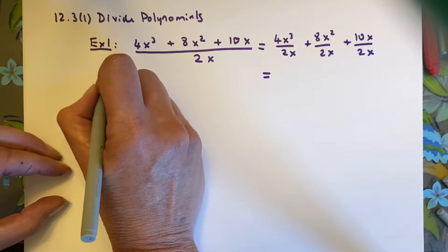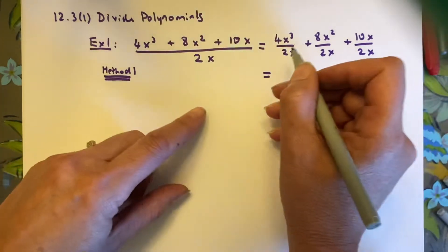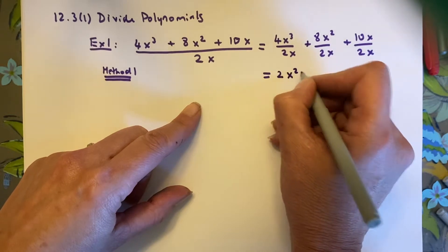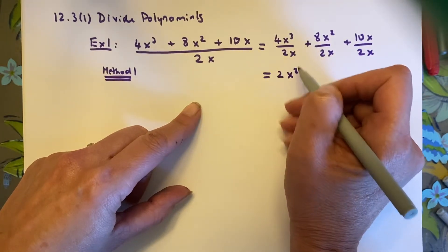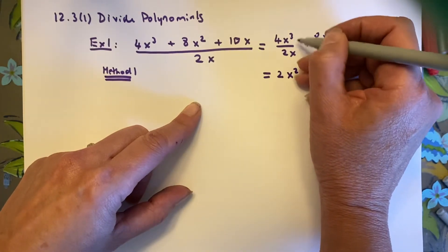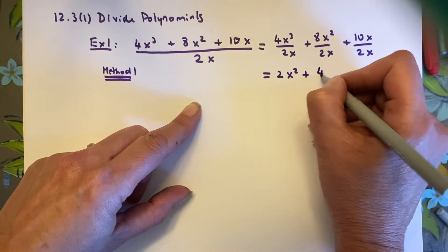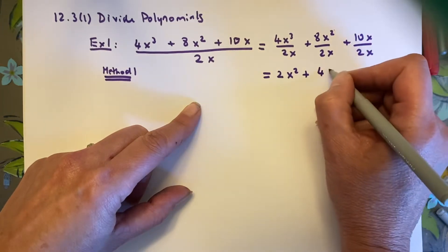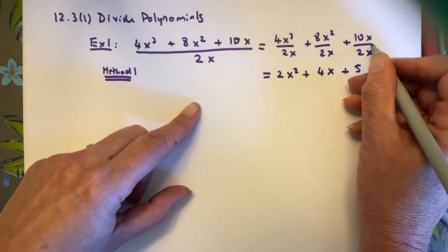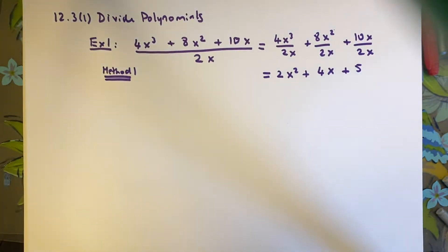With method 1: 4x cubed divided by 2x gives 2x squared — 4 divided by 2 is 2, and x cubed divided by x is x squared using exponent rules. 8x squared divided by 2x gives 4x. And 10x divided by 2x: 10 divided by 2 is 5, x divided by x is 1, so just 5. The result is 2x squared plus 4x plus 5.